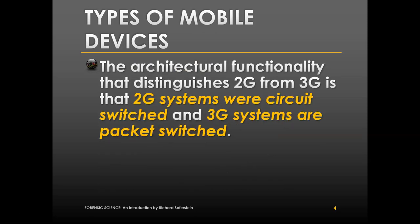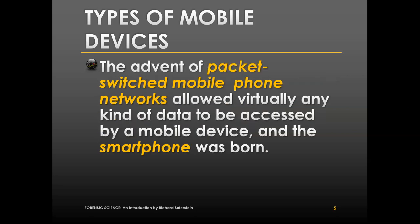The architectural functionality that distinguishes 2G from 3G is that 2G systems were circuit-switched, while 3G systems are packet-switched, which is why they were able to be faster. The advent of packet-switched mobile phone networks — that's 3G — allowed virtually any kind of data to be accessed by a mobile device. Thus, the true smartphone was born with the advent of 3G.